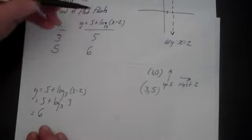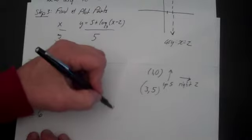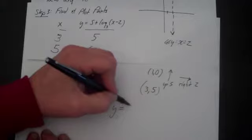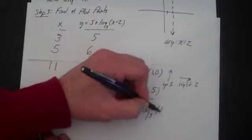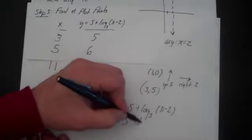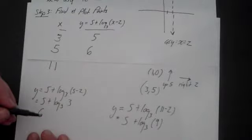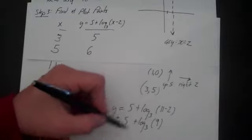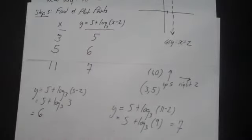Then I want to plug in another point. I know that log 3 of 9 is 2, so let's choose 11. Let's plug in 11. I get y equals 5 plus log base 3 of 11 minus 2. That's 5 plus log base 3 of 9. Log base 3 of 9 is 2, so that's going to be 7. And there I have my points.